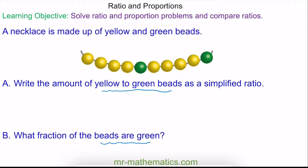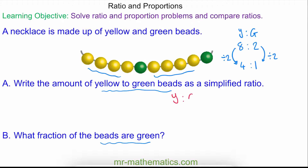For question A, we're going to write the ratio of yellow to green beads. In total we have 8 yellow and 2 green. We can simplify this ratio by dividing both by the highest common factor, which is 2. 8 divided by 2 is 4, and 2 divided by 2 is 1. So our simplified ratio of yellow to green is 4 to 1.